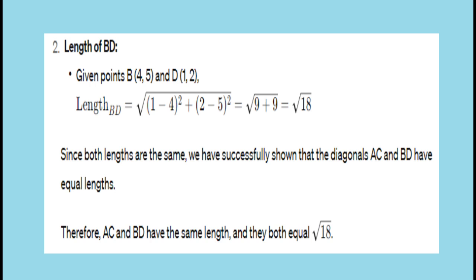So diagonal AC = √18 and diagonal BD = √18. Therefore, AC and BD have the same midpoint, and their diagonals have equal lengths.